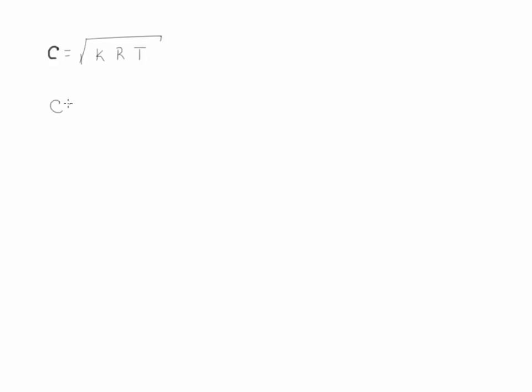The value of C is going to be equal to K, which is equal to 1.4. The value of R, which is given to be 1716 feet pounds per slug Rankine. And the value of the temperature is going to be negative 66 plus 460 Rankine.